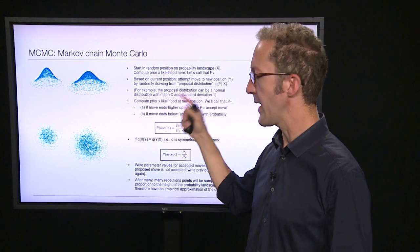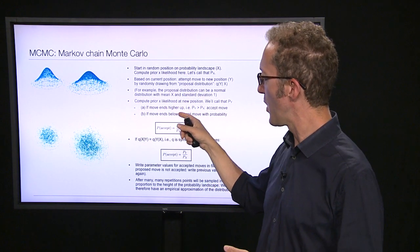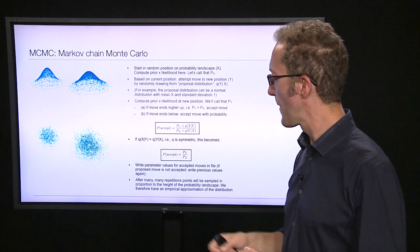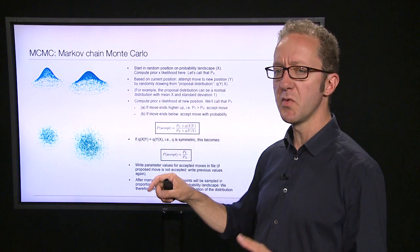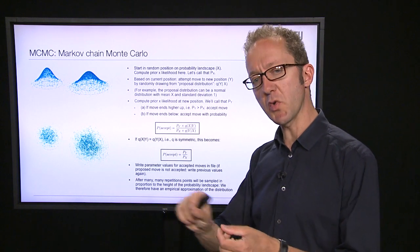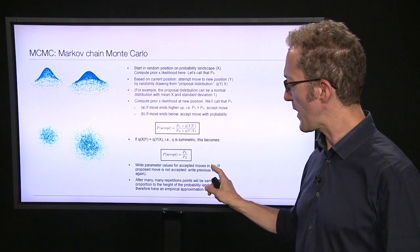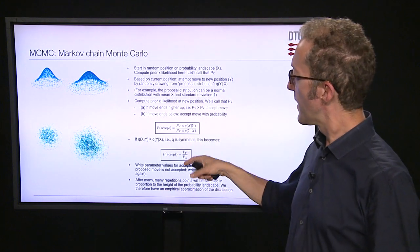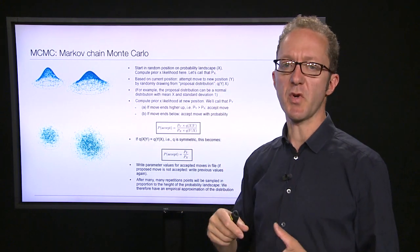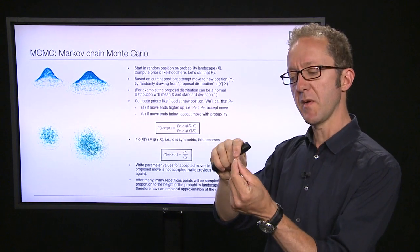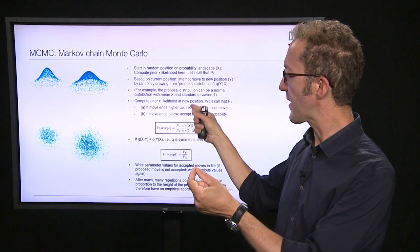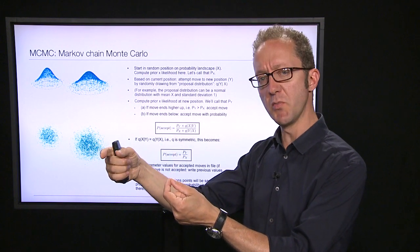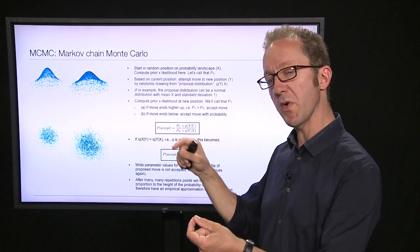In either case — whether you end higher up and accept by default, or end lower and accept by randomly drawing from this distribution — you write the set of parameter values for the new position in a sample file. If you do not accept the move, you write the values of the old position once more in your sample file. Then you repeat this process iteratively, proposing a move, accepting or not according to these rules, and writing the corresponding parameter values.